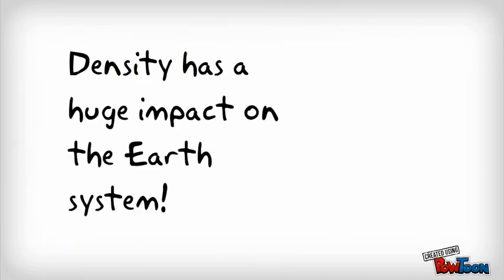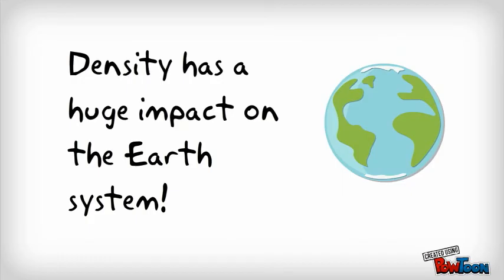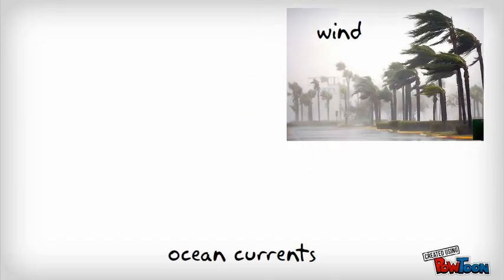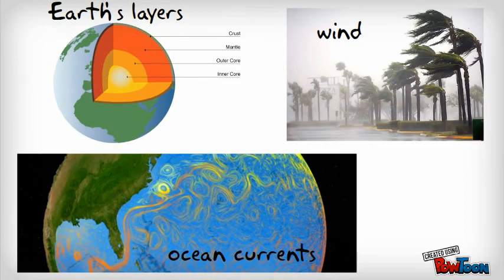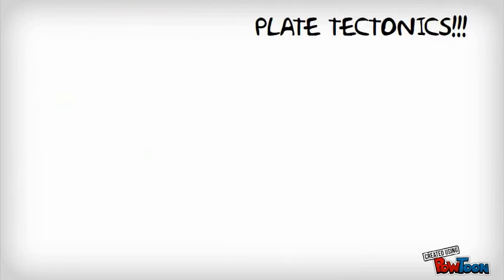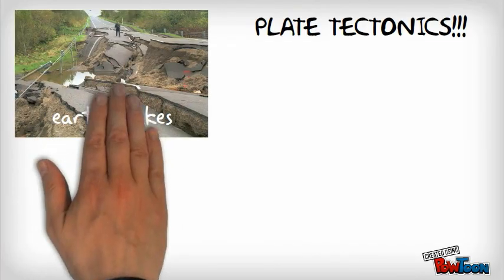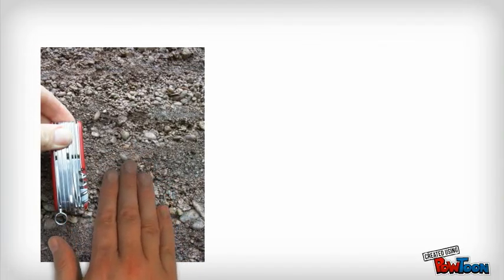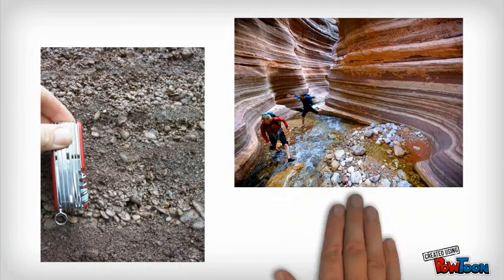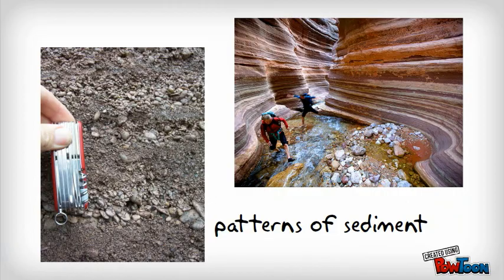Density is one of the major themes that we'll be exploring throughout the year because it impacts the Earth in so many different ways. Density is actually responsible for creating wind, creating ocean currents. It's responsible for creating the Earth's layers, crust, mantle, core, and so on. It causes the Earth's tectonic plates to move. And as a result, that creates earthquakes, volcanoes, tsunamis. It creates patterns of sediment when sediments are deposited, and many other things that we'll be exploring this year.